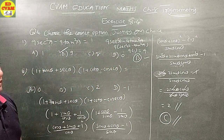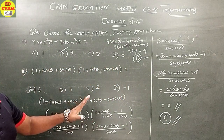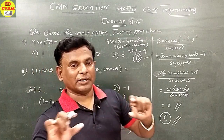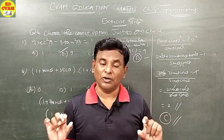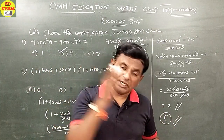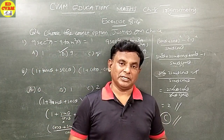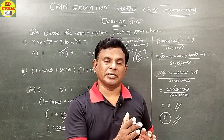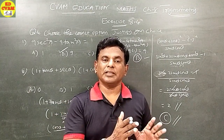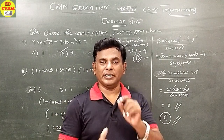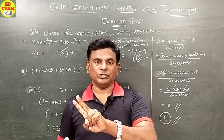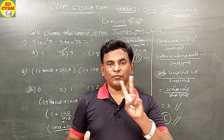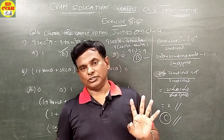The key strategy: whenever you see tan, cot, sec, cosec together, convert everything to sin and cos — the basic trigonometric values. About 99% of the time you need to convert to sin and cos.